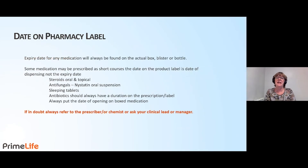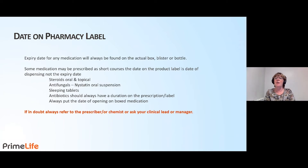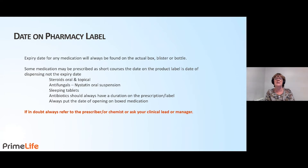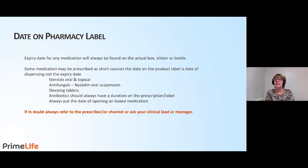Regarding the date on the pharmacy label: the expiry date for any medication will always be found on the actual box, blister or bottle — it is not on the pharmacy label. This date is the date that the pharmacy dispensed the medication. Some medications may be prescribed as short courses, and the date on the product label is the date of dispensing, not the expiry date.